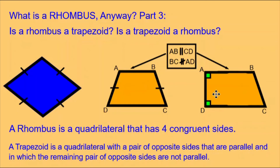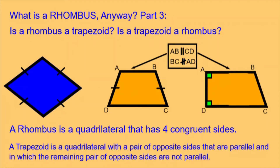Are these trapezoids rhombuses? The answer is no. The definition of a rhombus is a quadrilateral that has four congruent sides, and neither of these trapezoids have four congruent sides. In fact, the characteristics that make them trapezoids make it impossible for them to have four congruent sides. So: a rhombus is never a trapezoid, and a trapezoid is never a rhombus — so long as we are using the exclusive definition of a trapezoid.